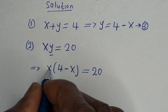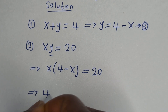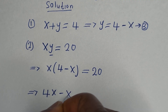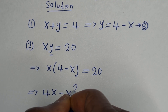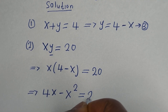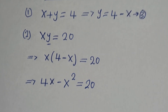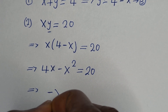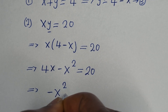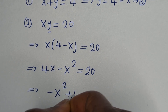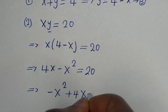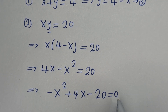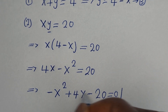Then from equation 2, xy is equal to 20, so we can substitute for y which is 4 minus x. x bracket (4 minus x) close bracket is equal to 20. Let us open the bracket: x multiplied by 4, this is 4x minus x multiplied by x, x squared is equal to 20.